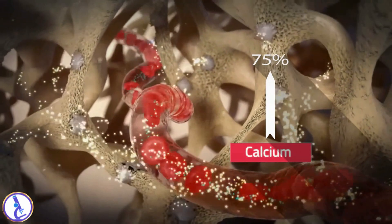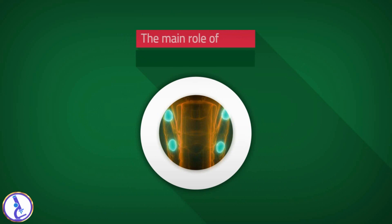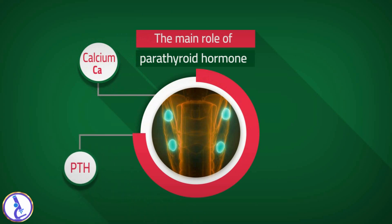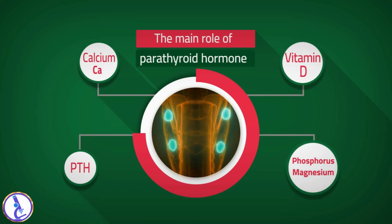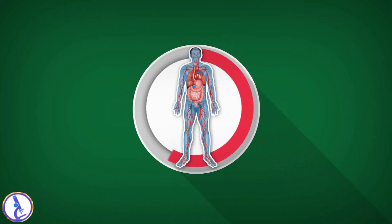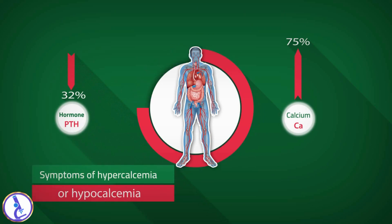As calcium levels begin to increase in the blood, PTH normally decreases. The main role of parathyroid hormone is to help the body maintain stable levels of calcium in the blood. It is part of a feedback loop that includes calcium, PTH, vitamin D, and to some extent phosphorus and magnesium. Conditions and diseases that disrupt this feedback loop can cause inappropriate elevations or decreases in calcium and PTH levels, leading to symptoms of hypercalcemia or hypocalcemia.